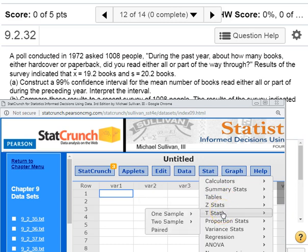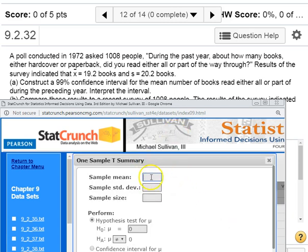We're finding the population mean, and we don't know the population standard deviation. So it's T-stat, one sample, and again we have summary data as opposed to a spreadsheet full of data.